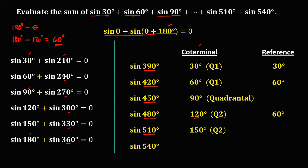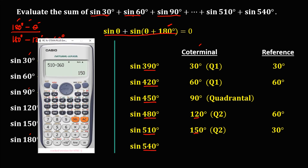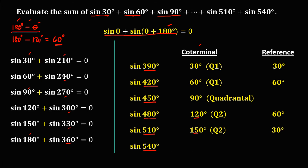To find the reference angle for 510°, since it's in quadrant 2: 180° − 150° = 30°. The reference angle is 30°. For the last one, 540°: 540° − 360° = 180°. The coterminal angle is 180°, which is also a quadrantal angle.